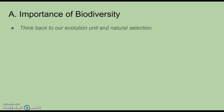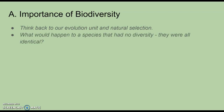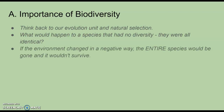Before we go into what biodiversity is, I want you to think back to our evolution unit on natural selection. We had this scenario: what would happen to a species that had no diversity — they were all identical? That could be a good thing sometimes, but if something were to happen to that environment in a negative way, the entire species would be gone. That's why for evolution to happen, we need some variance — species need variety, or they'll all fall under the same outcome.